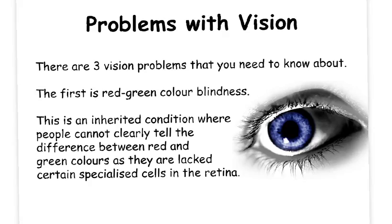There are three vision problems that you need to know about. The first is red-green colour blindness. This is an inherited condition where people cannot clearly tell the difference between the colours red and green as they are lacking certain specialised cells in the retina.